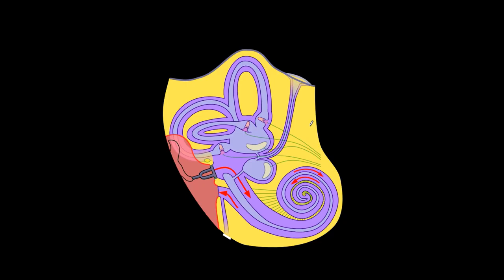At the base of the semicircular canals is an enlargement called the ampulla. In the ampulla are hair cells — this is specifically where the movement of endolymph is sensed. The endolymph pushes around the cupula, which sends a signal back to the brain through the vestibular nerve.